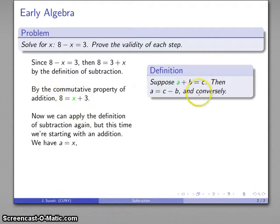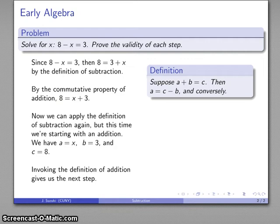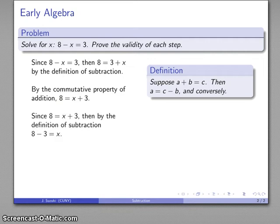And again, I'll compare what I have to what my definition is. So what do I have? I have a being x, b being 3, and c is 8. So I have a equals x, b equals 3, c equals 8, and I'm going to drop those into my definition of addition. Since 8 equals x plus 3, then my definition of subtraction tells me that 8 minus 3 is equal to x.